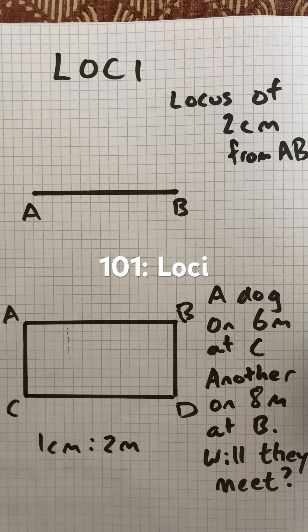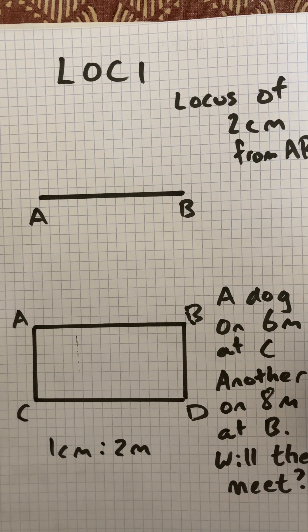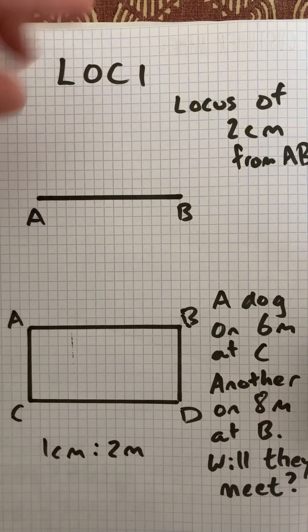Welcome to Martin Math, topic 101: loci. We're going to find the locus of all points that are 2cm from line AB.